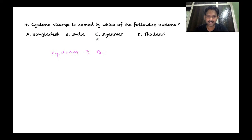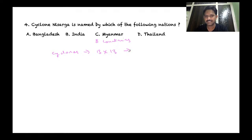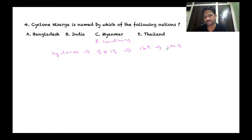Cyclones are named by a procedure adopted by 13 countries — previously only 8 countries were involved, but now 13 are. Each country gives a list of 13 names, making a total of 169 names maintained by the Indian Meteorological Department. The original 8 countries include Bangladesh, India, Oman, Maldives, Pakistan, Sri Lanka, Myanmar, and others.